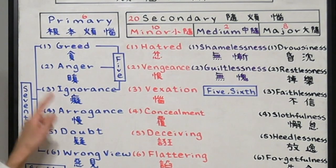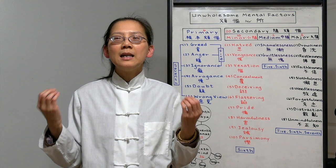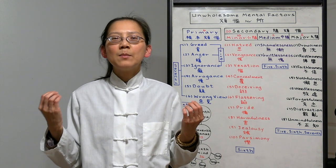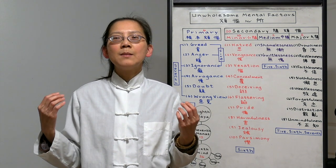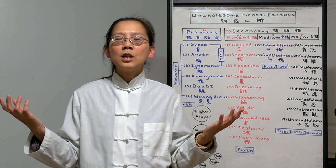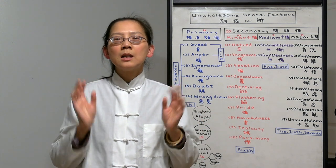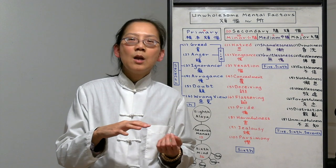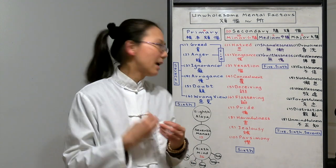Number four is arrogance. Everybody is arrogant in some ways. Some are arrogant because of their education, their wealth or their looks. They might look down upon others. That's all because of our arrogance.